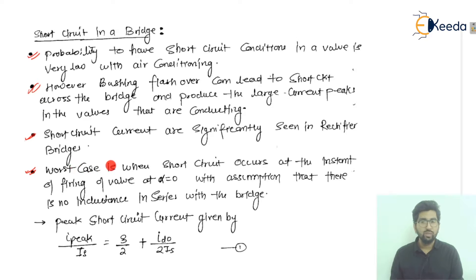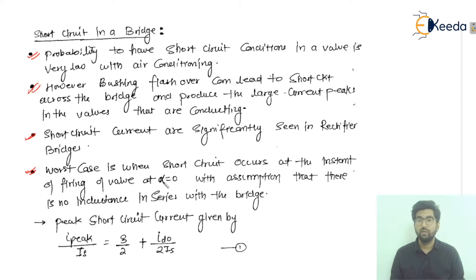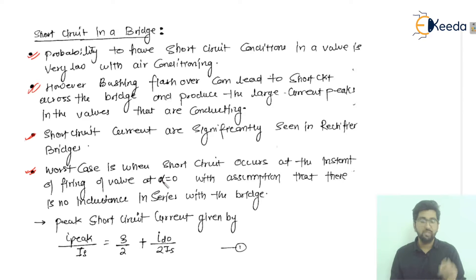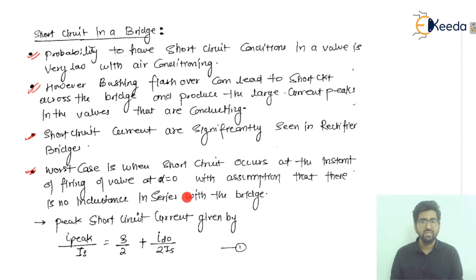Point four specifies the worst case: a short circuit occurring at the instant of firing of the valve at alpha equal to zero. Thyristors need a gating pulse signal to start — that is called firing. If there is a short circuit at the instant the thyristor is fired at alpha = 0, that is the worst case. The assumption taken is that there is no inductance in series with the bridge.